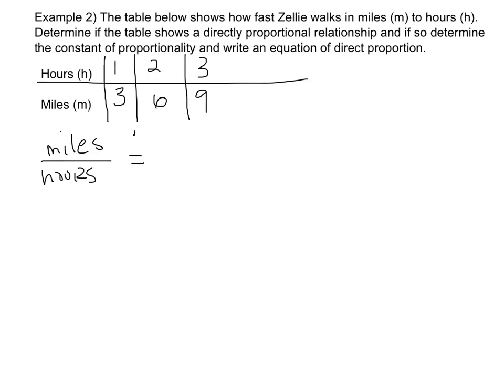And let's see. So, in 3 miles it took her 1 hour, 6 miles 2 hours, 9 miles 3 hours. I can see that these are directly proportional because they are all equivalent to 3 miles per 1 hour.